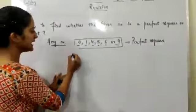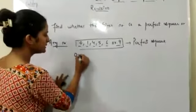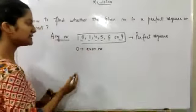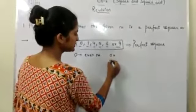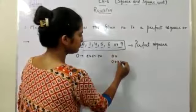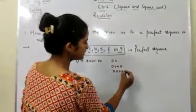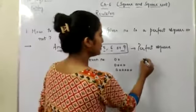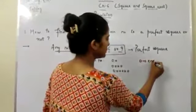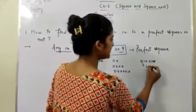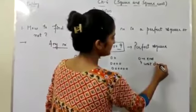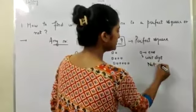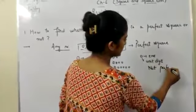One condition with 0 is that the number of zeros should be even. Even number means 2 zeros, 4 zeros, 6 zeros — like this. If we have only 1 zero at the unit digit, then that number will not be a perfect square.